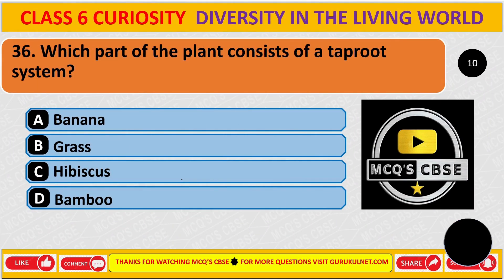Which part of the plant consists of a taproot system? The correct answer is C: hibiscus.